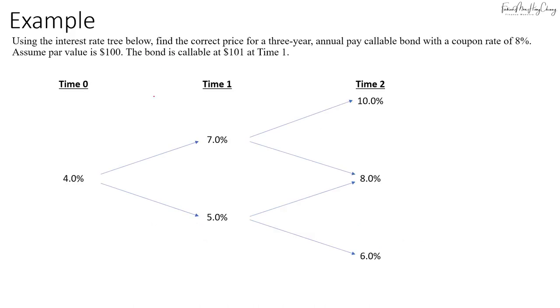Start with this example. We have the interest rate tree below here, which is the same as what I did for the previous example. Now we have a three-year annual pay callable bond with a coupon rate of 8% and par value of $100. The bond is callable at $101 at time 1 only. Be careful with this—sometimes it's callable at par, sometimes there's a different call price, and the call period varies. Always read the question carefully before you proceed.